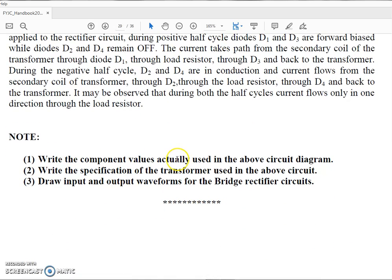Write the component values actually used in the above circuit diagram. Then write the specifications of the transformer used in the above circuit. Normally we use a 9-0-9 transformer. If it is a three terminal means if it is center tap secondary transformer, it will be of 9-0-9, otherwise it will be of 0 to 9 volts. Then you have to draw input and output waveforms for bridge rectifier circuits.